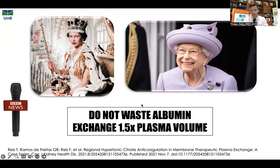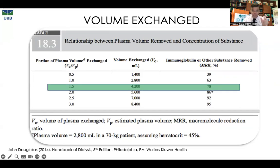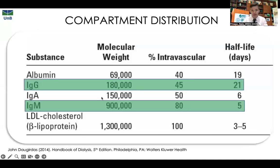We usually exchange 1.5 volemia of the patient. This table from Dalgidra's book explains why: if you exchange 0.5 volemia you remove 39% of antibodies; one volemia removes 63%; 1.5 volemia removes 78%. Going further to two volemias gives only 88% — you spend 33% more resources for a tiny gain. So we only exchange 1.5 volemia per session.